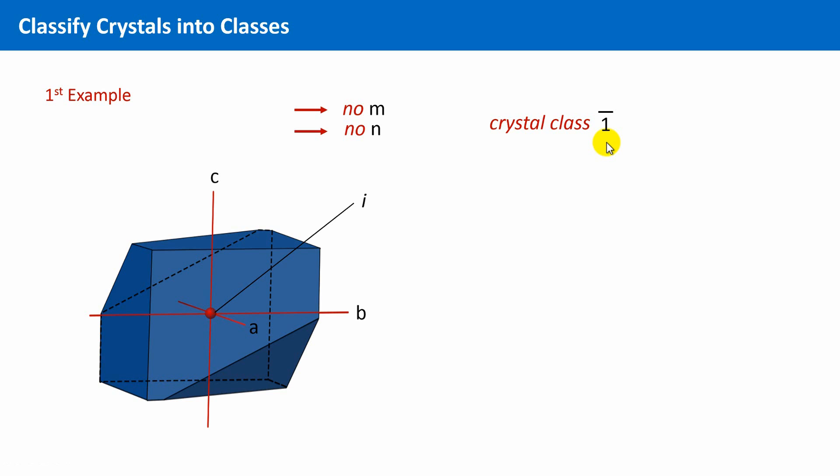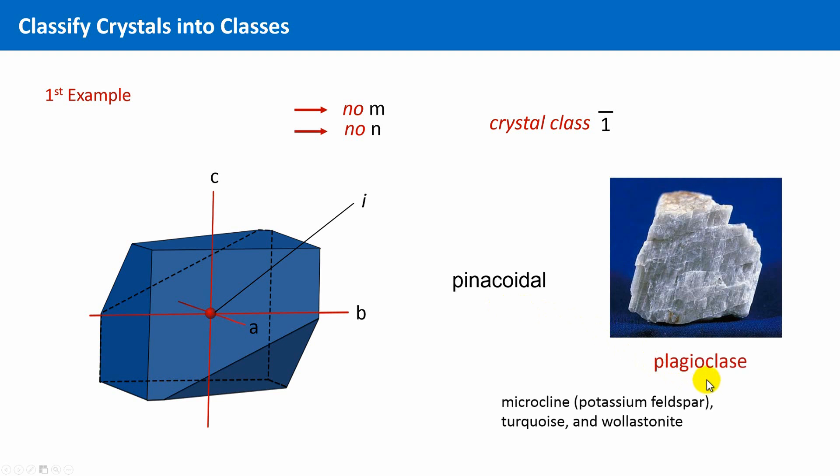Every crystal class has also a specific name, which is derived from a geometrical description of the most representative shape of such crystals. So the crystal class one bar is also called pinacoidal. Not very many crystals in nature belong to this crystal class, but amongst others, for instance, plagioclase, microcline, turquoise and wollastonite.